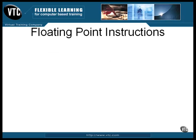Four more instructions. These are special cases that allow some common operations to be performed quickly. The FCHS instruction changes the sign of the number in ST0. The FABS instruction takes the absolute value of ST0. The square root instruction replaces the contents of ST0 with its square root. The FSCALE instruction multiplies ST0 times 2 raised to the power of ST1.